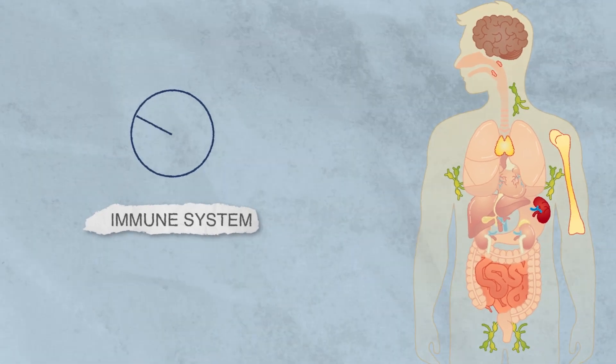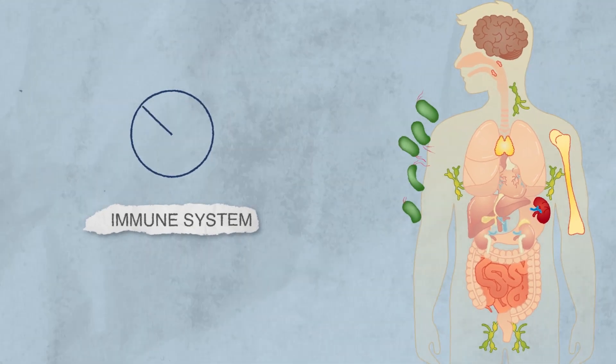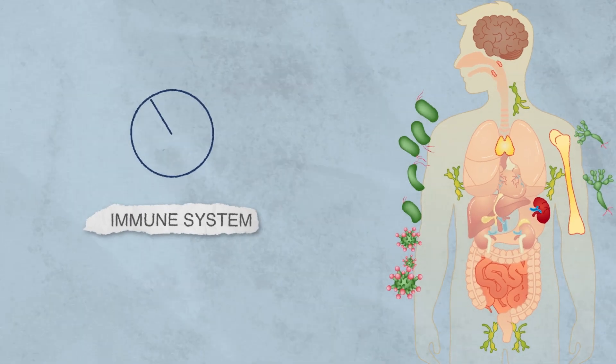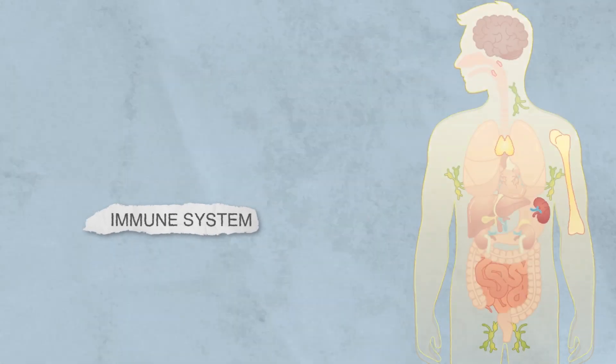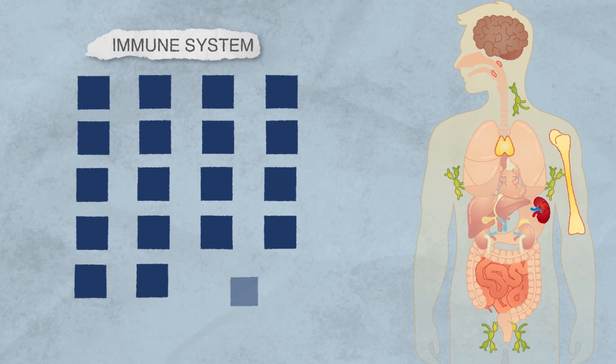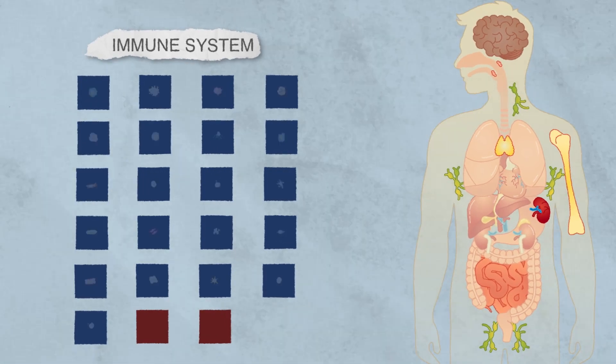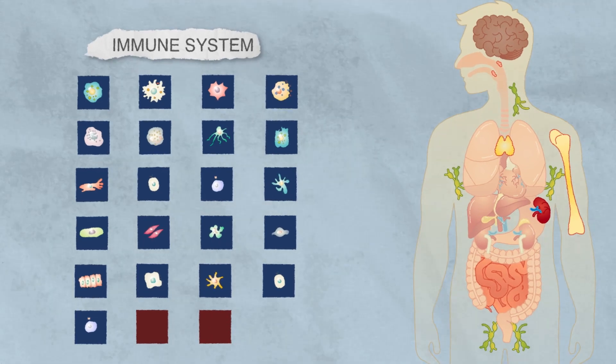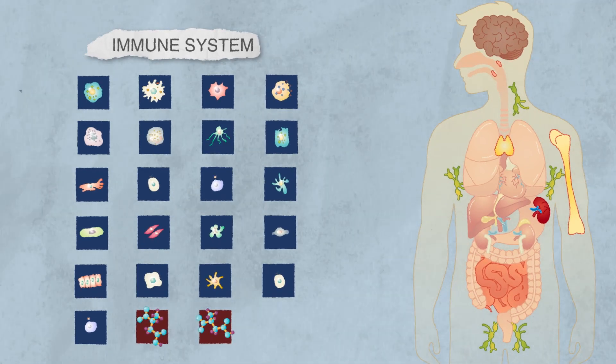Every second of every day, our body is under attack by bacteria, viruses and fungi. But our body has its own army to protect us. The immune system has a lot of tasks and all these tasks are taken care of broadly by 21 cells and 2 proteins. Let's see how this works.